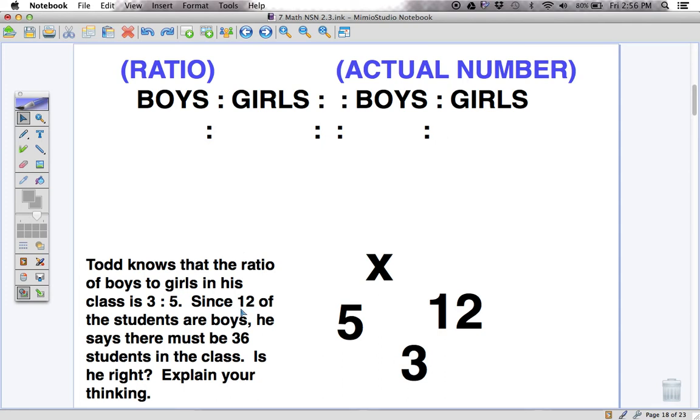On the right hand side is our actual number. And it says that there's 12 boys in the class. So now we have to figure out where do we put these four figures. We have 3 is what represents the first ratio, because it says the ratio of boys is 3. And the girls is 5, 3 to 5. If you look at the problem, it says 12 of the students are boys. So that's where the 12 goes, because in the actual numbers there are 12 boys.